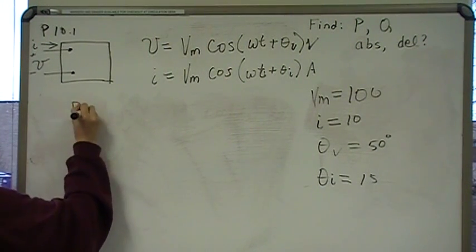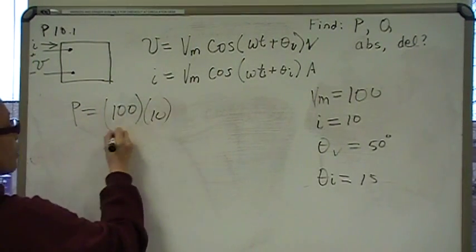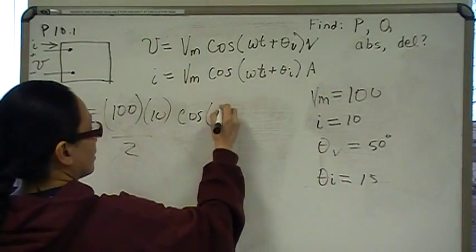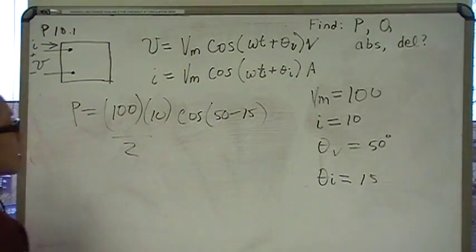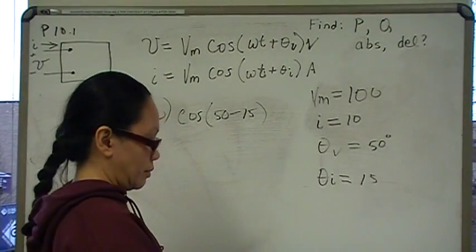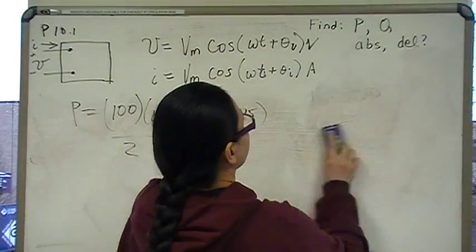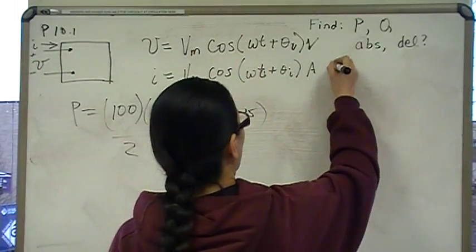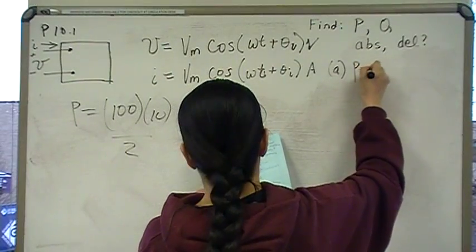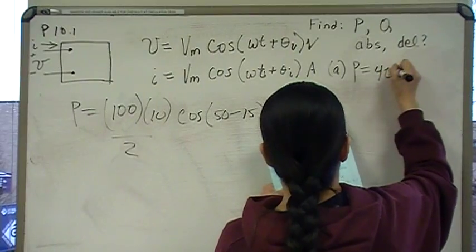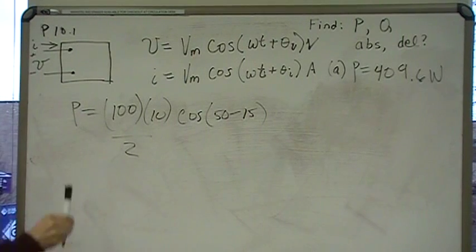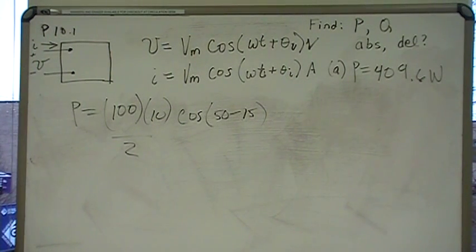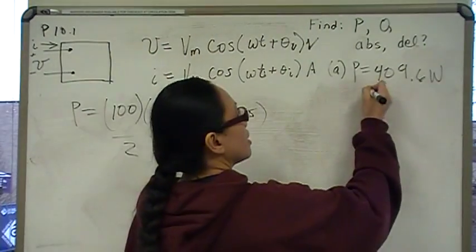So the real portion: P equals 100 times 10 over 2, times cosine of theta-V minus theta-I, which is 50 minus 15. When you do that, you should come up with P equals 409.6 watts. The passive sign convention tells us that when positive current enters the positive terminal of the device, positive power means the device is absorbing.